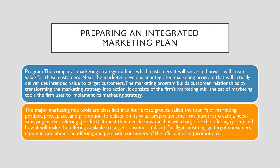Preparing an integrated marketing plan. The company's marketing strategy outlines which customers to serve and how it will create value for them. Next, marketers develop an integrated marketing program that will actually deliver the intended value to target customers. The marketing program builds customer relationships by transforming the marketing strategy into action. It consists of the firm's marketing mix — the set of marketing tools used to implement its marketing strategy. The major marketing mix tools are classified into four broad groups called the four Ps: product, price, place, and promotion.